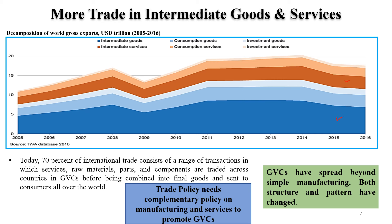It is very important to support this fragmented production process so that more goods, parts and components are traded. Trade policy needs to develop a complementary policy both for manufacturing and services. For example, industrial policy can look into transport policy and innovation policy, and trade policy can be linked to investment policies as well. This kind of overlapping of policies is essential to support the fragmentation process.